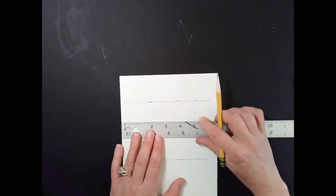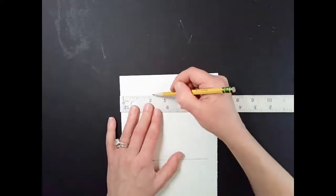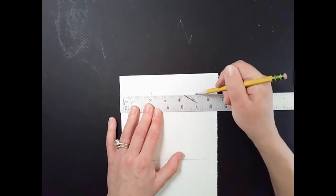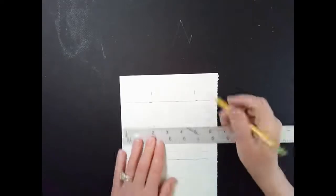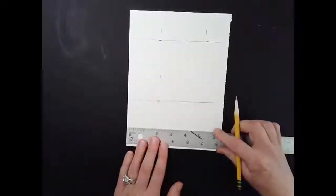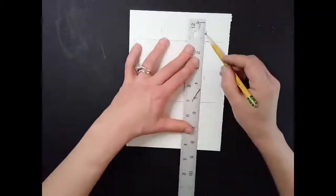Now I'm going to do the same thing in the other direction, except I only want them to be 3 inches apart from each other. So I'll put a dot at 2 and 5, slide it down, 2 and 5, slide it down, connect them.